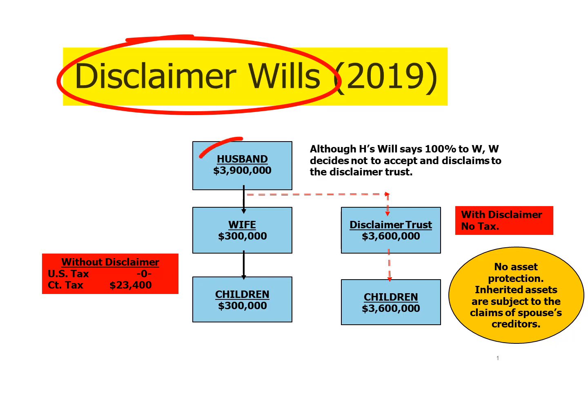The husband, who has $3.9 million, has a will that once again gives everything to his surviving spouse. If everything passes to the surviving spouse there'd be no tax, assuming the surviving spouse is a U.S. citizen. However, the husband's will includes a tax planning option for the wife to exercise shortly after the husband passes away.